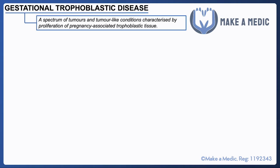Gestational trophoblastic disease is a spectrum of tumors and tumor-like conditions characterized by proliferation of pregnancy-associated trophoblastic tissue. What that means is essentially when the conceptus forms, instead of fusing in such a way that it creates a viable intrauterine pregnancy that continues to grow and differentiate, it creates a slightly abnormal type of cell with abnormal genetics that leads to excessive growth and no or little differentiation.